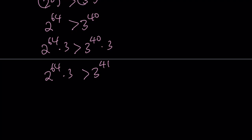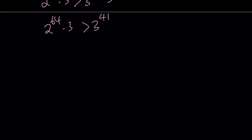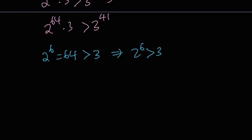Now let's go ahead and see if we can improve this. At least I was able to get 3 to the power 41, but I do not have 2 to the power 70 on the left-hand side. But we're going to take care of that now. We know that 2 to the power 6 equals 64, and that is greater than 3. So this gives us 2 to the power 6 is greater than 3. I'm going to multiply both sides of this by 2 to the power 64. So 2 to the power 6 times 2 to the power 64 is greater than 3 times 2 to the power 64.